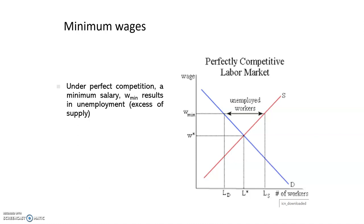So imagine that we are in a labor market and we have this demand curve and this supply curve. We can see that the point where they cross, the point where they equal, we find the wage of equilibrium. This is the optimum wage, and here we can see the optimum number of workers that will be hired in this market.